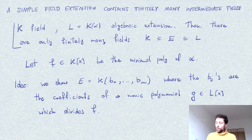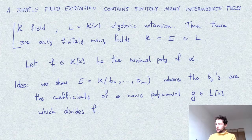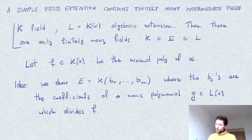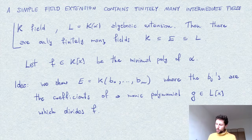Of course, f is irreducible with coefficients in k, but when we view it in L[x] it will not be irreducible — but it will have finitely many factors. So if we prove that E is generated by these coefficients, we will have shown there are finitely many possibilities for such intermediate extensions.